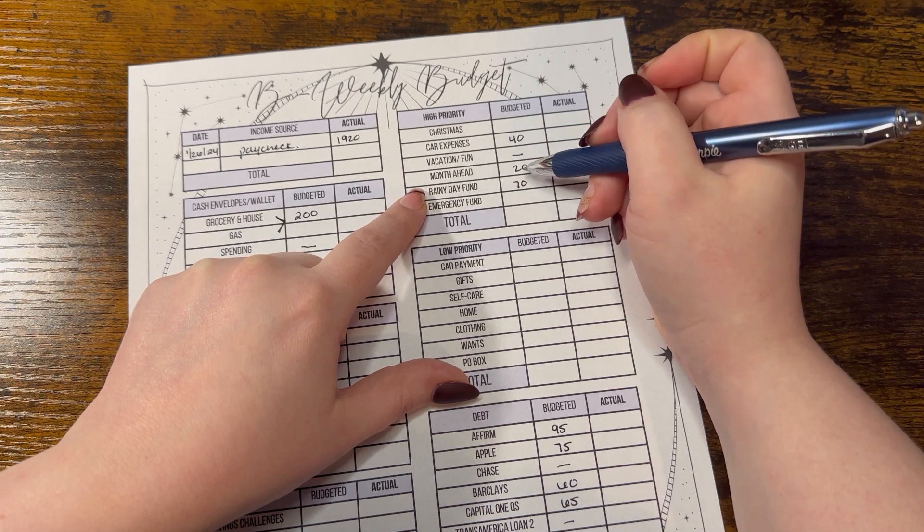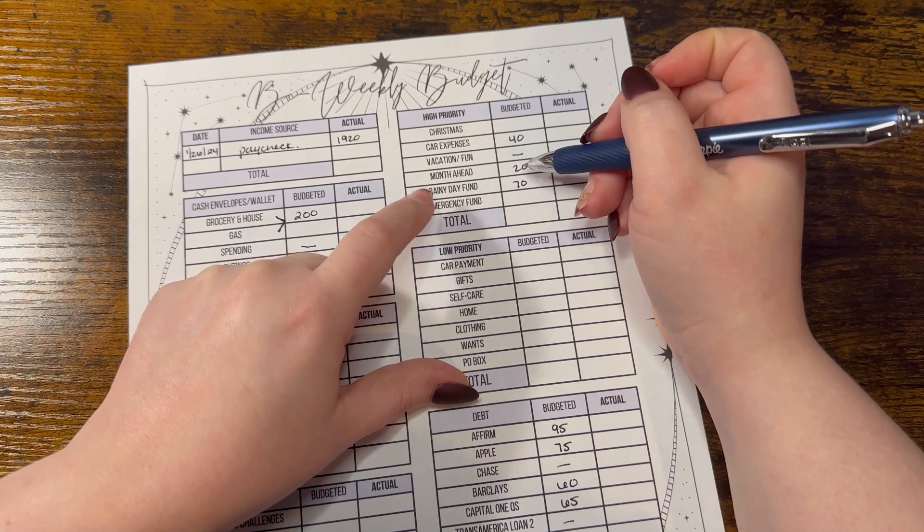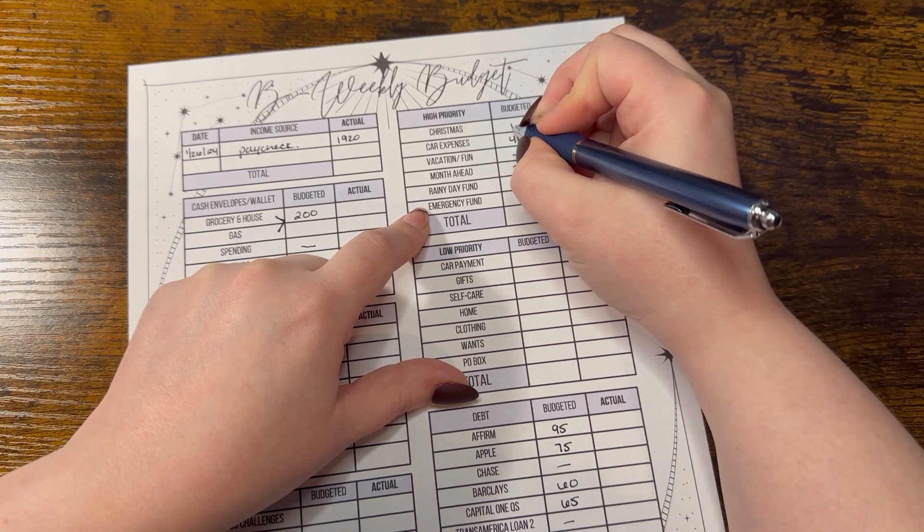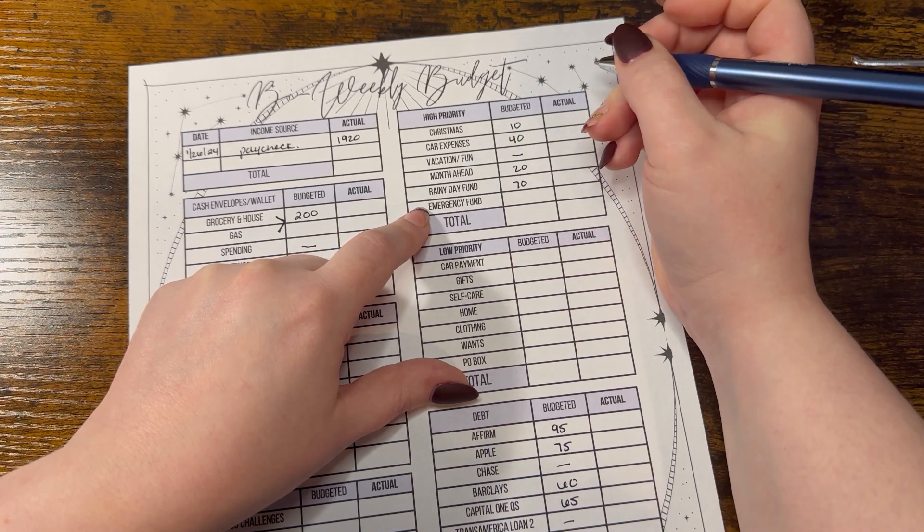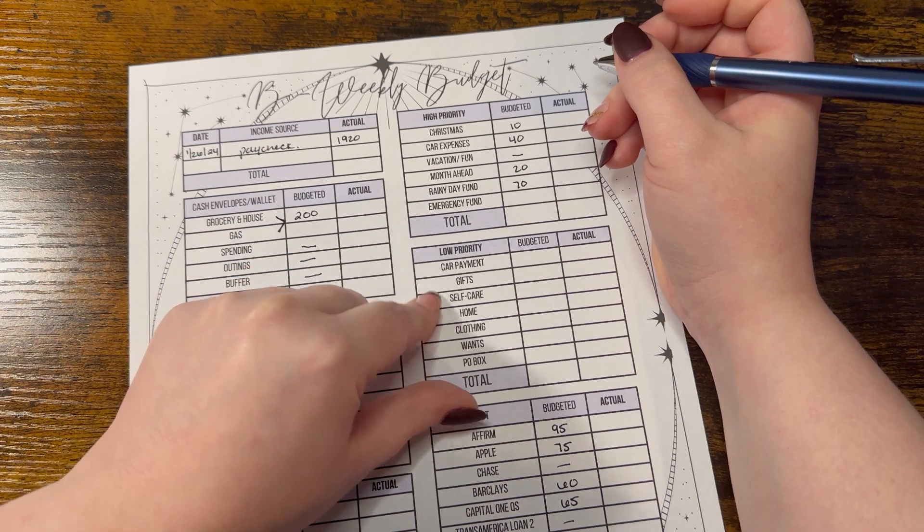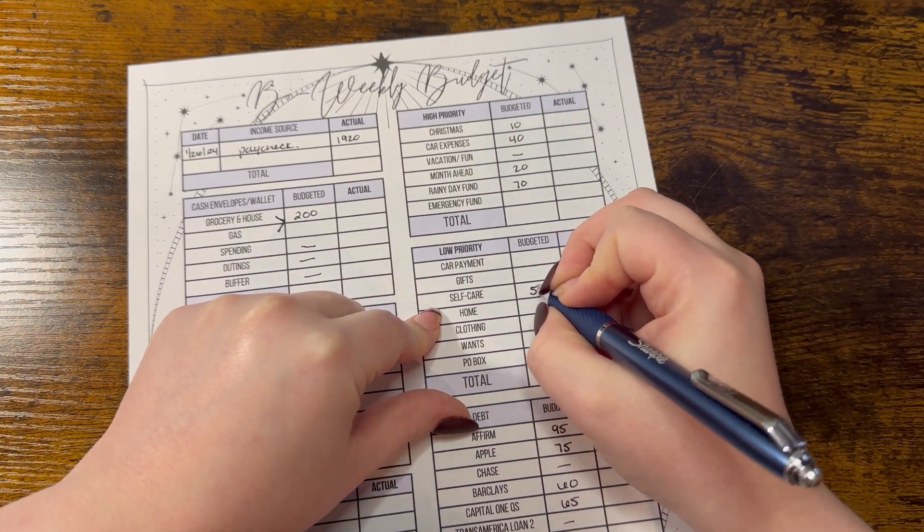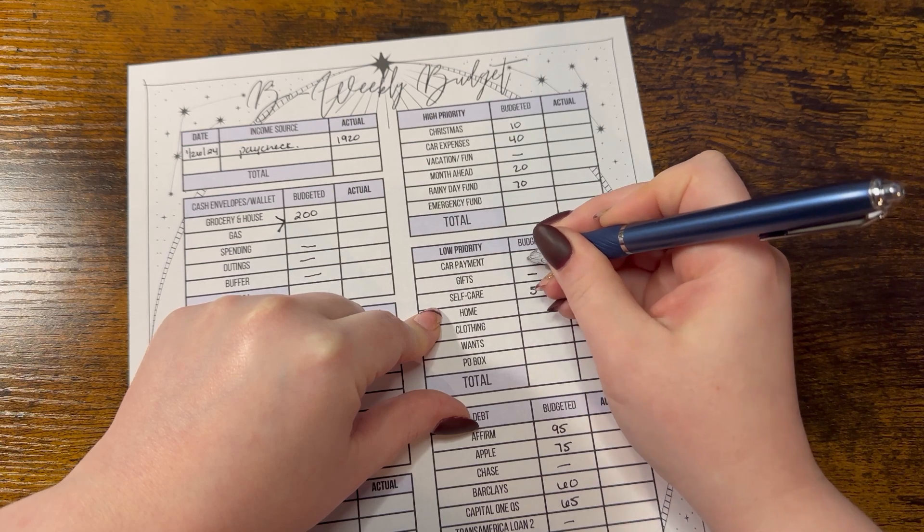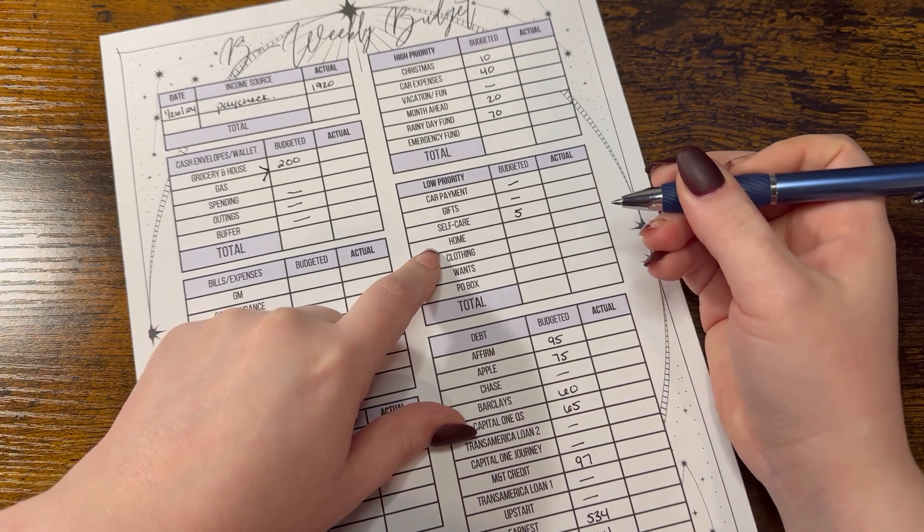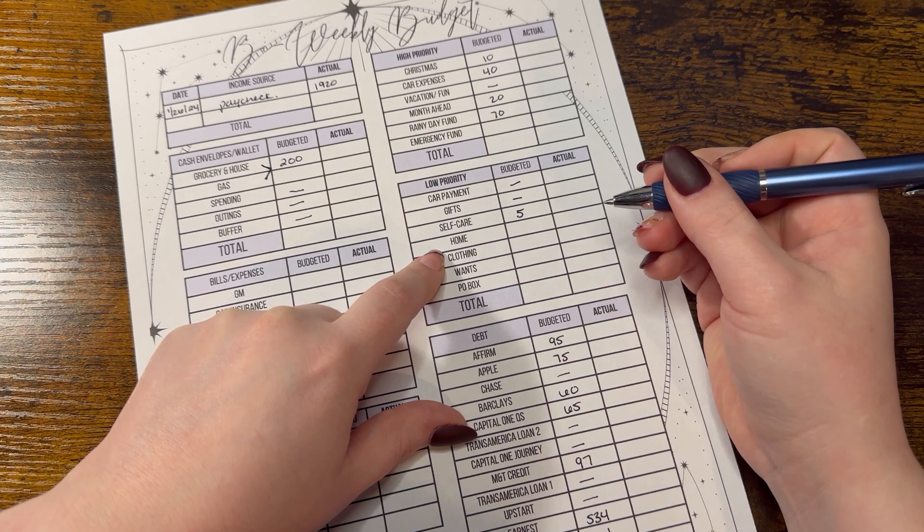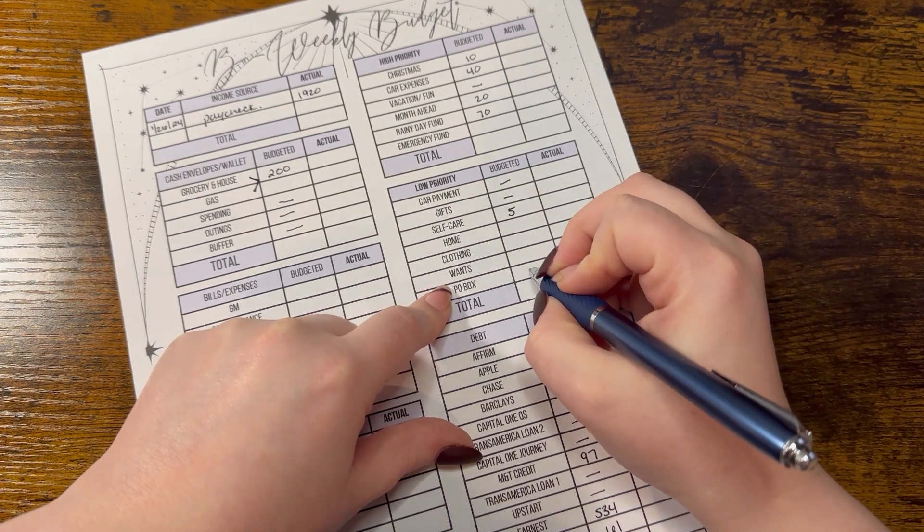We do need to start bulking up Christmas, so I'm going to put $10 in Christmas. Self-care is going to get $5. Right now, gifts and car payment is getting nothing. And P.O. Box is going to get $5.